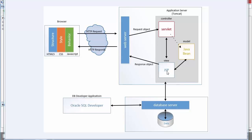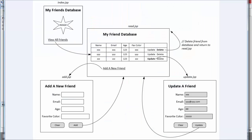Our JSP's — our view for right now — are just going to be a couple of JSP pages: an index.jsp and a read.jsp. So if you remember our sitemap, it looks like this.